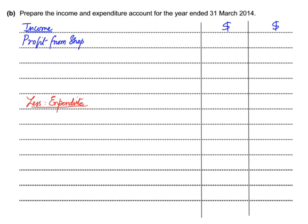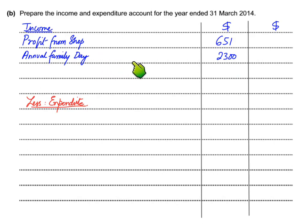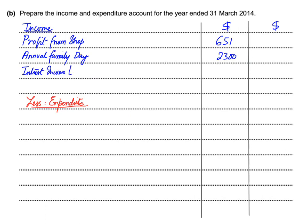Other sources of income for the Ocean Fishing Club include the annual family day receipt. If there were related expenses we would net them off; for example, receipts of 2,300 minus expenses of 2,000 gives profit of 300. If expenses exceeded receipts the result would be a loss from annual family day, which would go to expenditure. We net the amounts to show a single profit or loss figure.